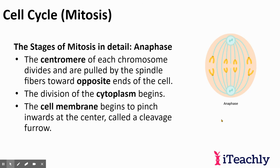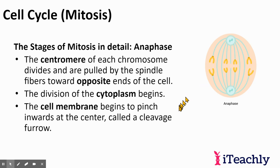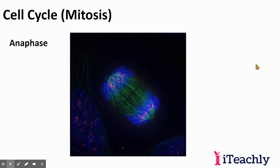Anaphase is when the spindle fibers start to retract, pulling a sister chromatid to each side. Each cell now gets the same exact copy of DNA. Things can also go wrong here — if these don't separate correctly, problems can occur. The division of cytoplasm begins, and the cell membrane starts to pinch inward in the center, called a cleavage furrow. The spindle fibers, having pulled the sister chromatids apart, will now go back to being cytoskeleton.